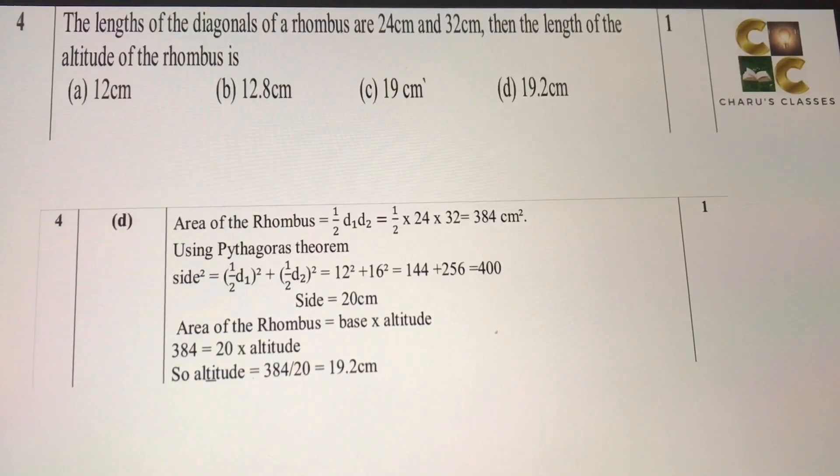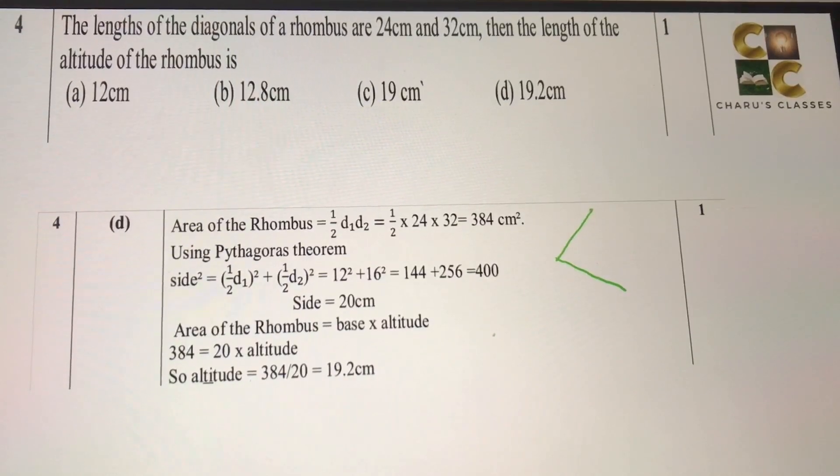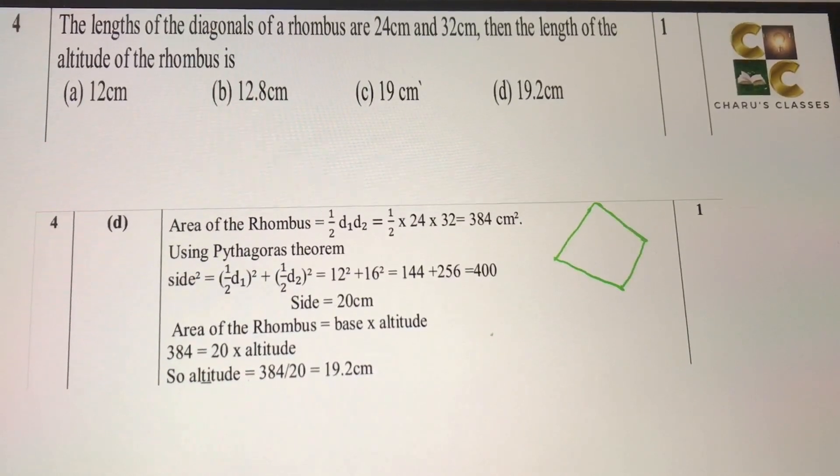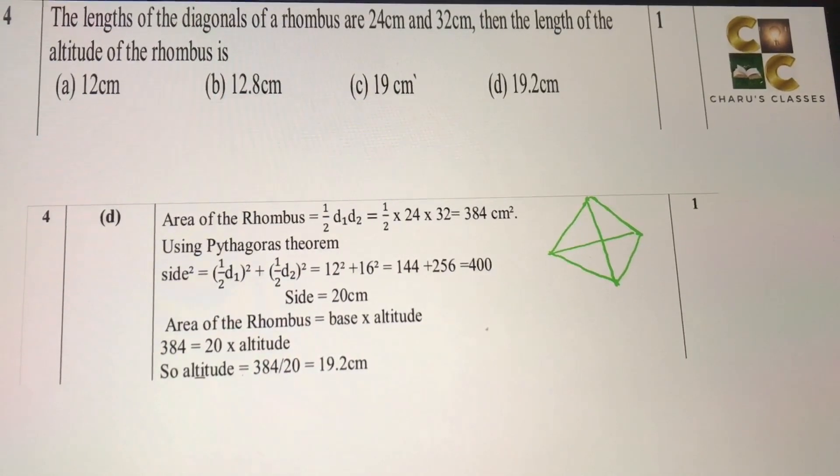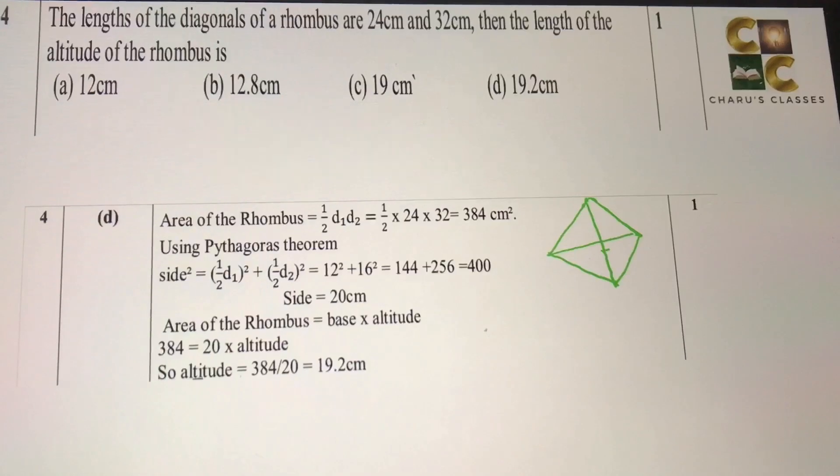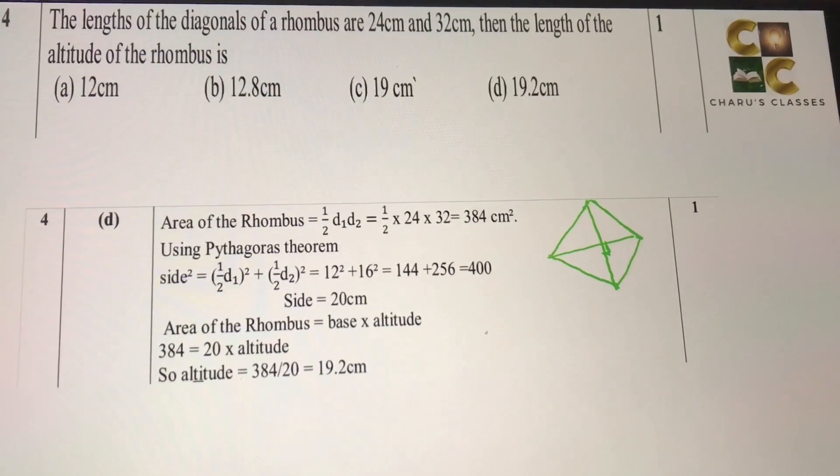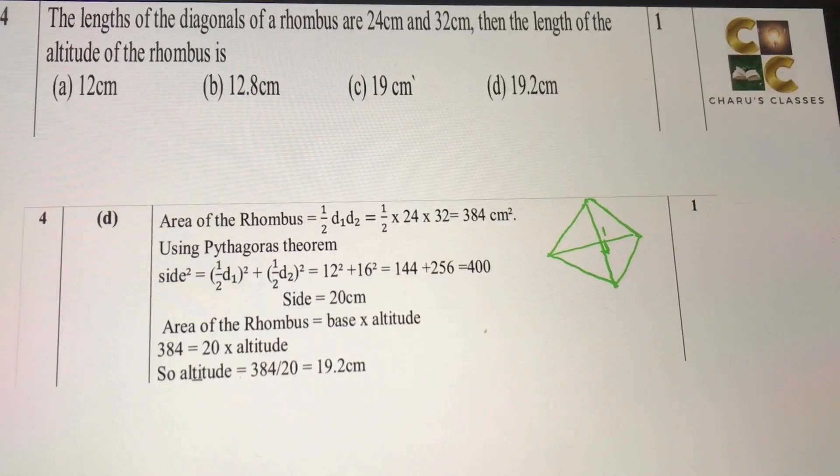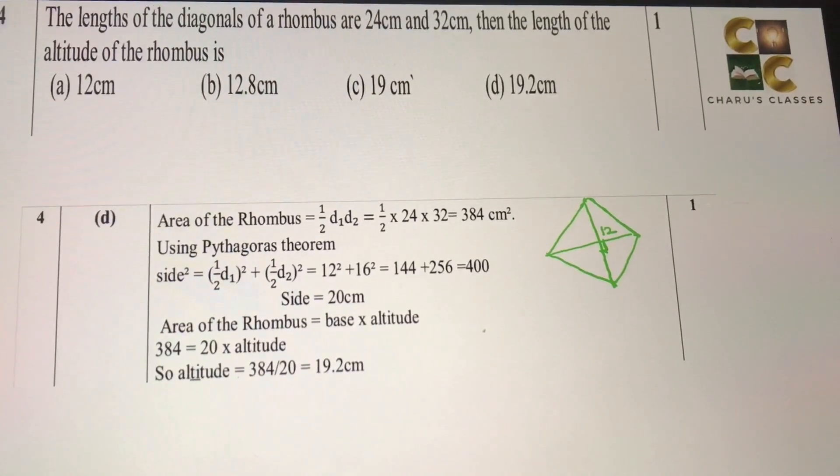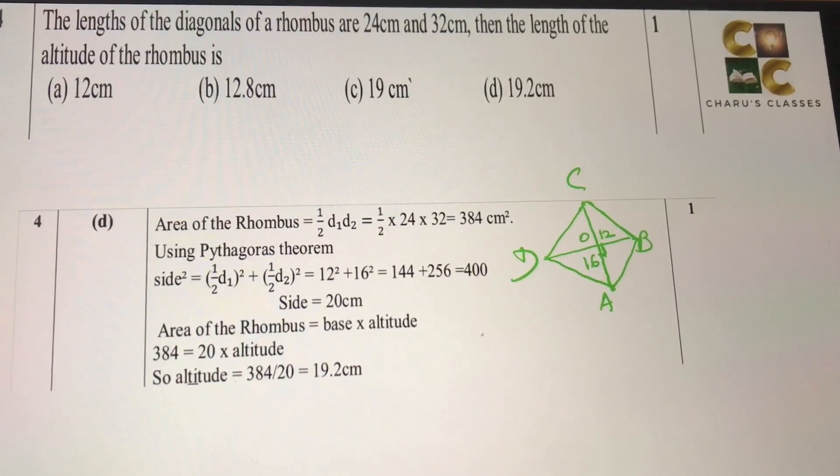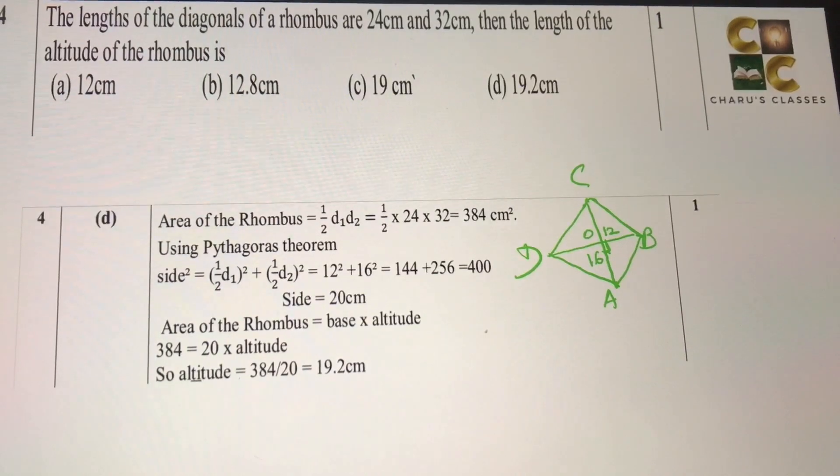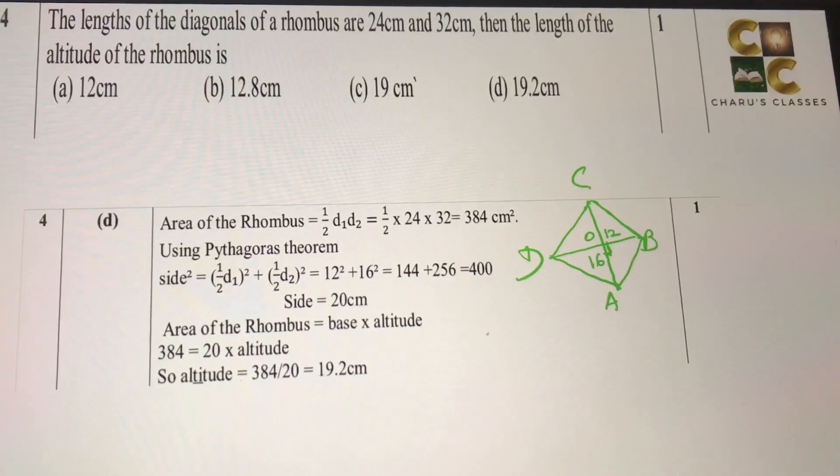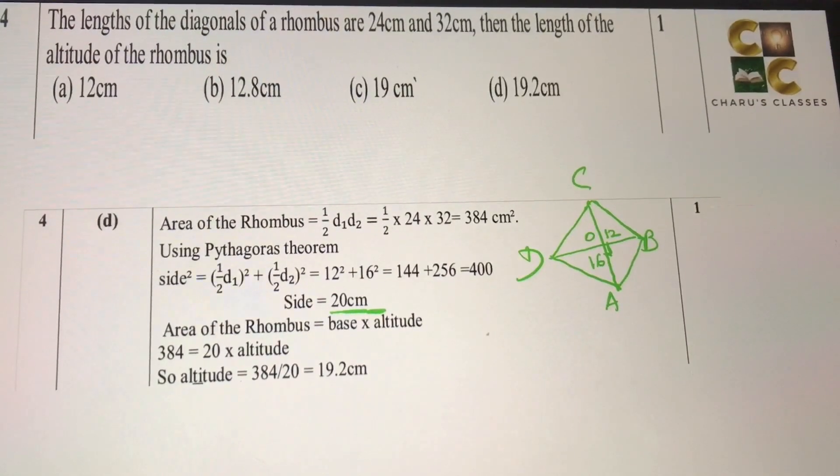Fourth question: the length of diagonals of a rhombus are 24 cm and 32 cm. Then, the length of the altitude of the rhombus is. In rhombus we know that all four sides are equal, and the diagonals of the rhombus, they intersect each other at 90 degrees. They bisect each other at 90 degrees rather. So the 24 cm diagonal, its half is 12, and the other 32 cm diagonal, its half is 16. If we talk of triangle AOB, we can use the Pythagoras theorem, and from that we will find side AB. OA square plus OB square will give you AB square. So the side is coming as 20 cm. Now we know...